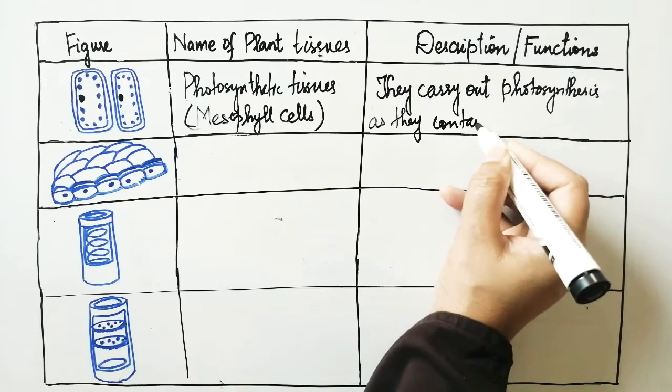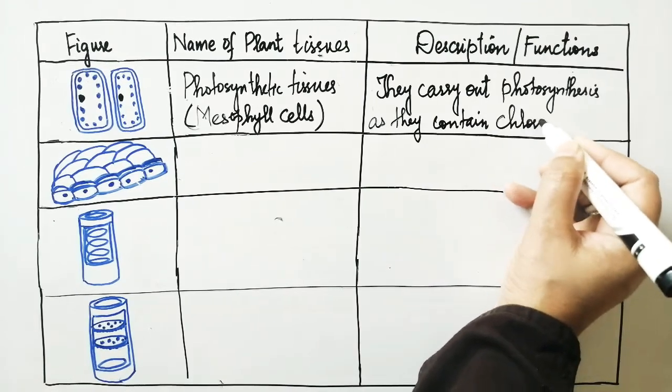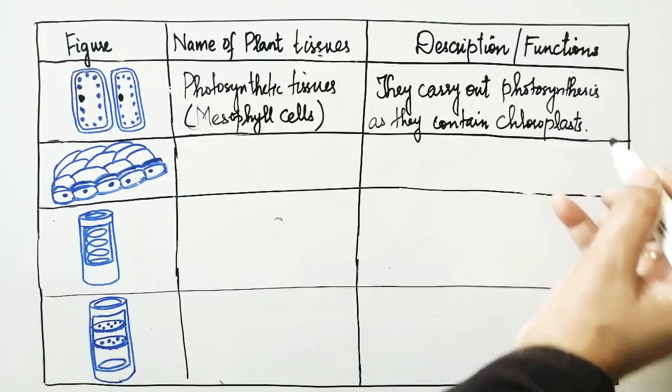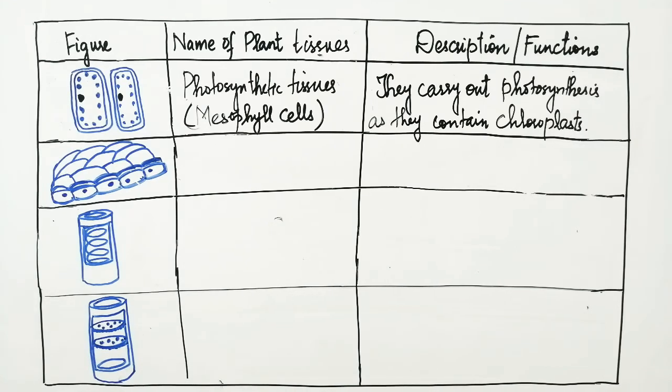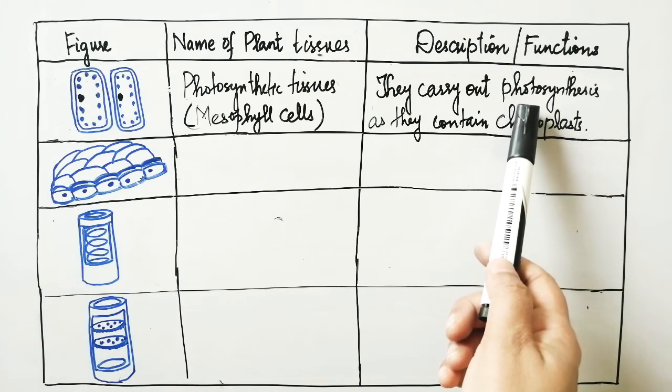As they contain chloroplast in them, and chloroplast is a cell part in which chlorophyll is present, and that chlorophyll actually helps in the food making process of the plant called photosynthesis.